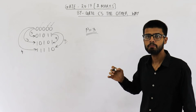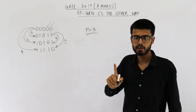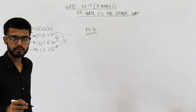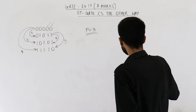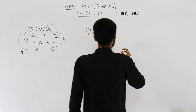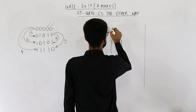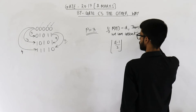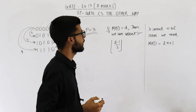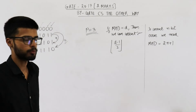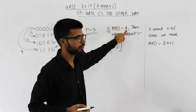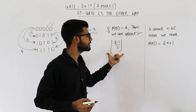Now we need to find out how many bit errors can be corrected. Keep in mind, we are talking about error correction — it is not error detection, it is error correction. Let me write the formulas. There are two formulas that can be used; I'll just write down both of them. If you go by this formula, it says if the minimum Hamming distance is equal to D, then you can correct a maximum of these many bits of error.